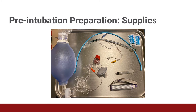Your institution may have variable equipment. It is important to select an appropriate size MAC blade, Miller blade, or video laryngoscope blade, if available, for the size of your patient. The appropriate endotracheal tube diameter should also be selected based on your patient's size. For most adults, this is often between a 7.0 and an 8.0 tube.